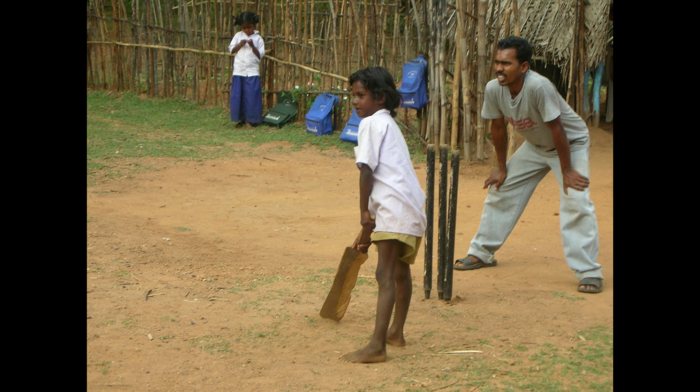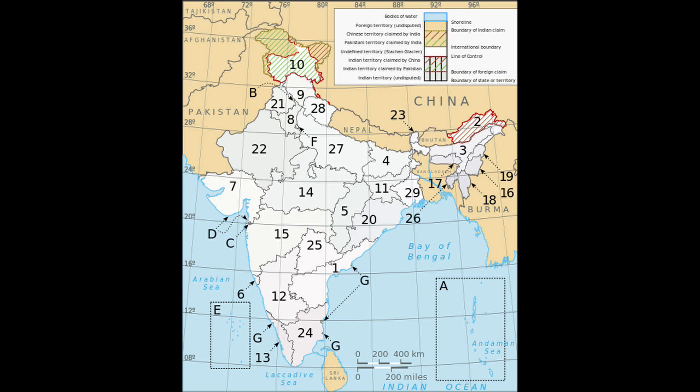India contains 172 IUCN-designated threatened animal species, or 2.9% of endangered forms. These include the Asiatic lion, the Bengal tiger, the snow leopard, and the Indian white-rumped vulture. The pervasive human encroachment of recent decades has critically endangered Indian wildlife. In response, the system of national parks and protected areas, first established in 1935, was substantially expanded. In 1972, India enacted the Wildlife Protection Act and Project Tiger to safeguard threatened species. The Forest Conservation Act was enacted in 1980. India has over 500 wildlife sanctuaries and 13 biosphere reserves, four of which are part of the World Network of Biosphere Reserves.